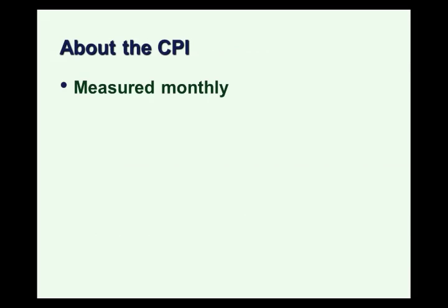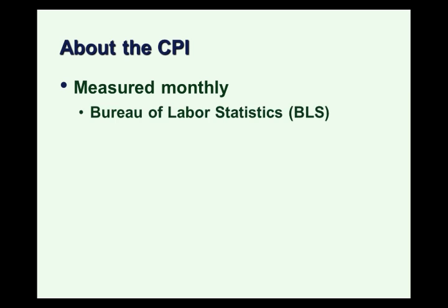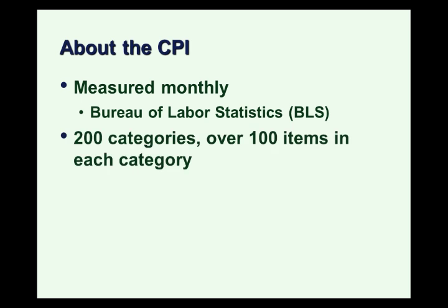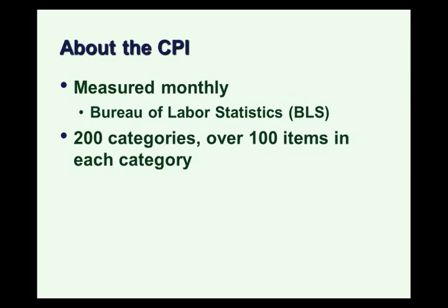The CPI is measured monthly by the Bureau of Labor Statistics, which is part of the Department of Labor in the federal government. Measuring the CPI is quite an undertaking. There are over 200 categories with over 100 items in each category in this market basket, in an effort to capture the kinds of things that consumers buy — from vaccinations to shaving cream.